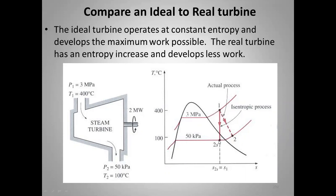In this example the isentropic exit point is inside the dome, so there would be some liquid moisture. For a real turbine with irreversibility, entropy increases. We still go to the same exit pressure — shown here as the 50 kPa isobar — but at increased entropy, which puts us in the superheat region.